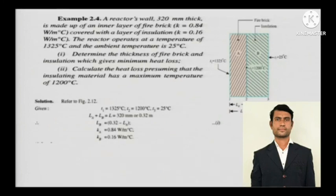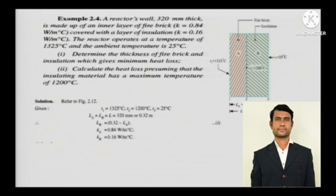Now we are entering into the composite zone. A reactor wall 320 mm thick is made up of an inner layer of fire brick with k equal to 0.84 watts per meter degree Celsius, covered with a layer of insulation with k equal to 0.16 watts per meter degree Celsius. The reactor operates at 1325 degree Celsius and the ambient temperature is 25 degree Celsius. Determine the thickness of the fire brick and insulation for minimum heat loss, given the insulating material has a maximum temperature of 1200 degree Celsius.